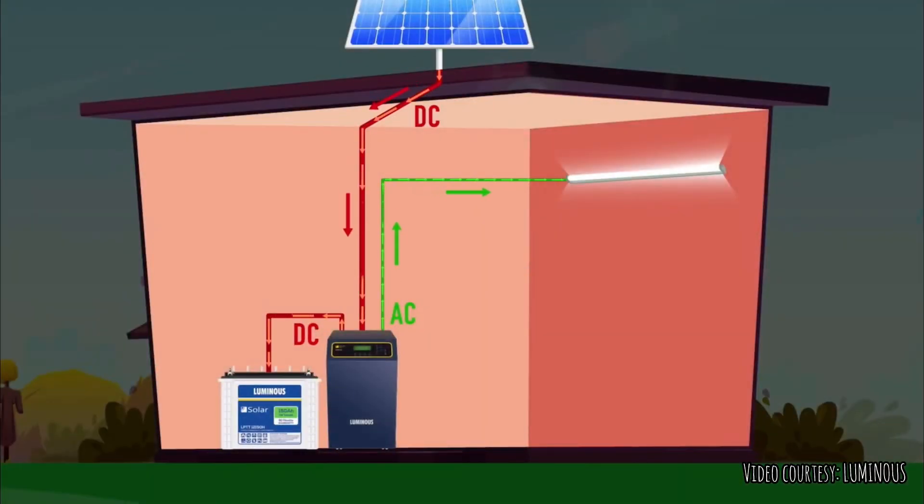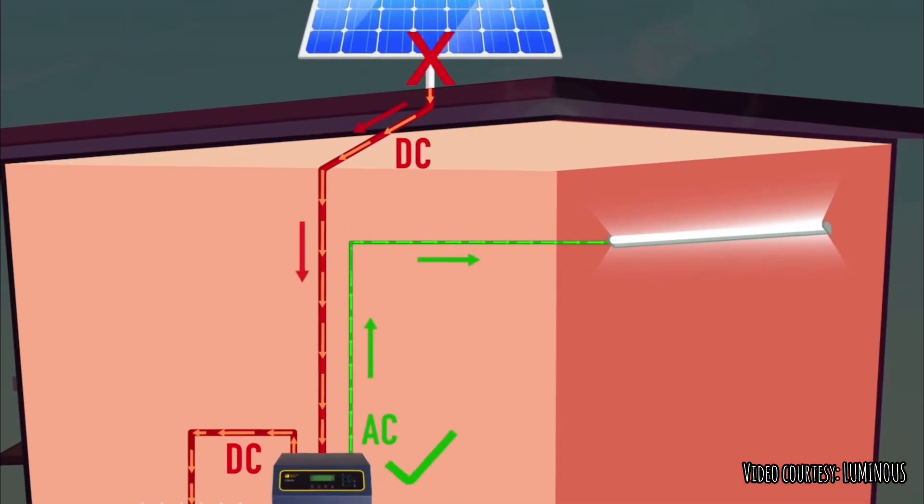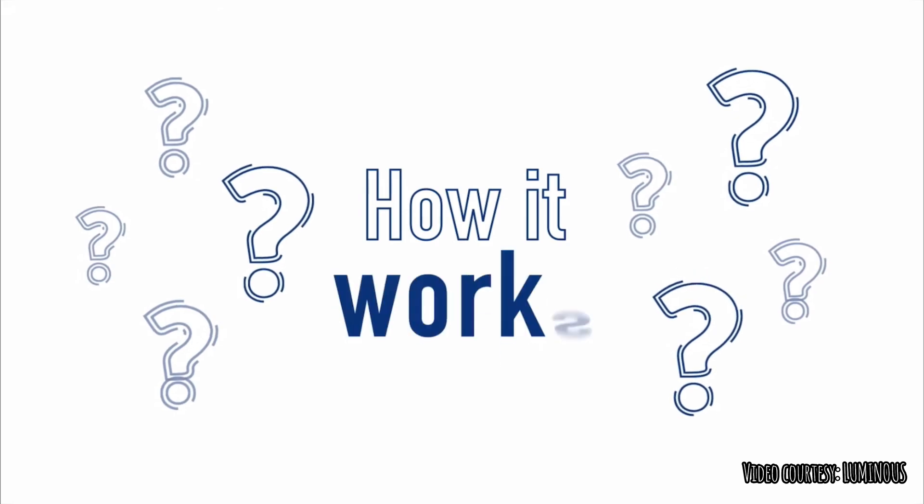This type of grid system works even when there is no supply from the mains or when the solar panels don't generate electricity. So how does it work?